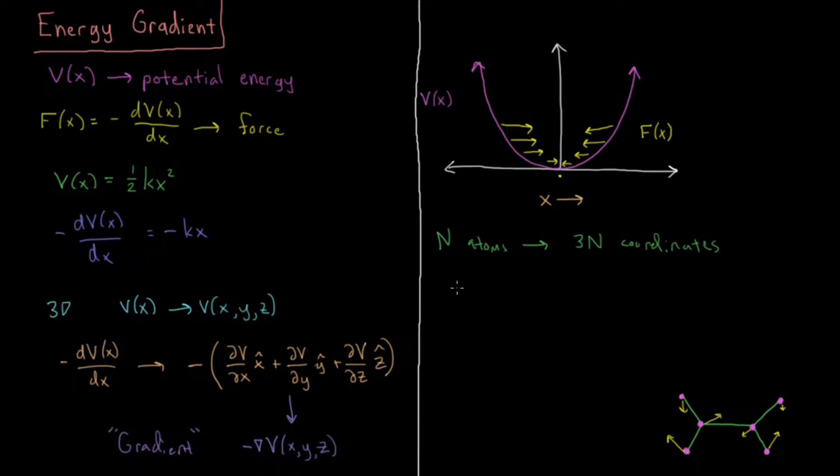So what does that mean for V? So that means V, it's going to be V of x1, y1, z1, x2, y2, z2, etc., all the way up to xn, yn, zn, for however many n atoms that we have.